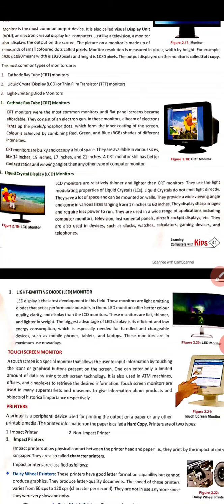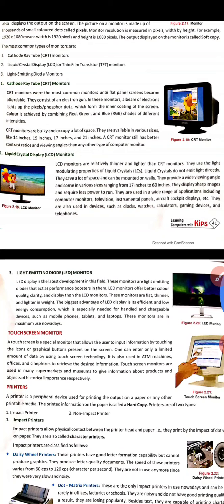This is a touch screen monitor. A touch screen is a special monitor that allows the user to input information by touching icons or graphical buttons on the screen. Touch screens are found at ATM machines, railway stations, airports, etc. One can enter only a limited amount of data using touch screen technology. They are also used in offices to retrieve desired information.